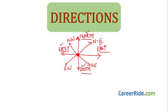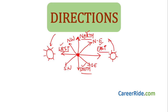Moving to the second concept: we know the sun rises in the East and the sun sets in the West. This is common knowledge but we need to remember it because in exams they may say the person starts walking towards sunrise or towards sunset — that means the person is walking towards East or West respectively.